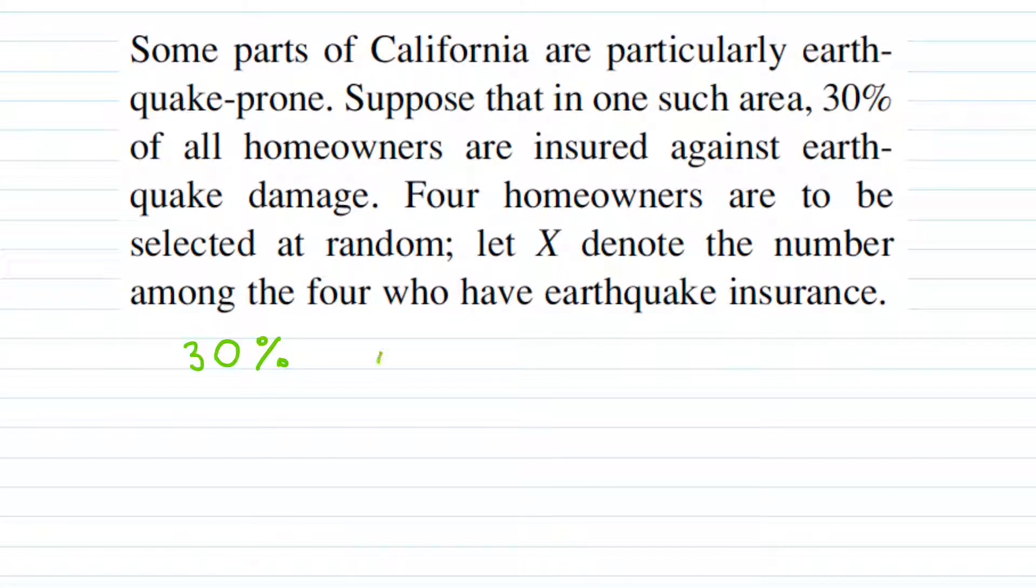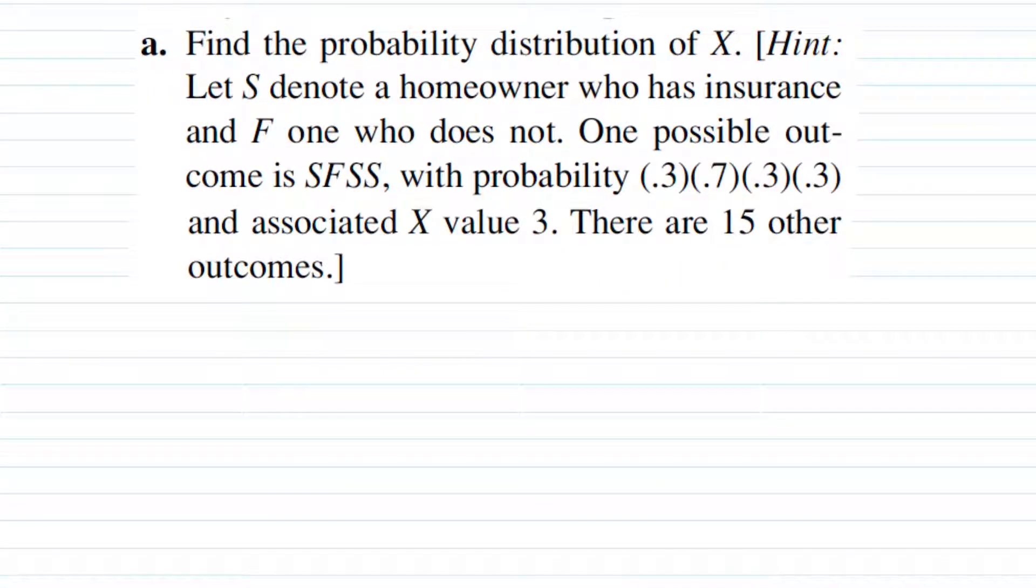So 30% are insured houses and 70% are not. Question A is find the probability distribution of X.